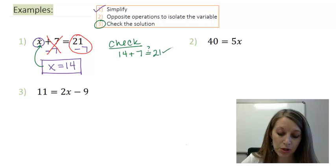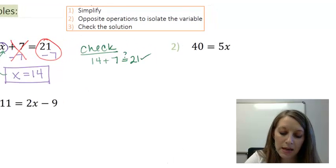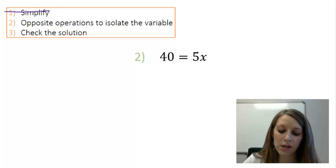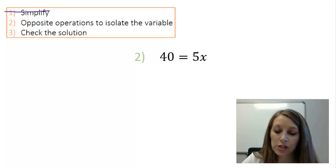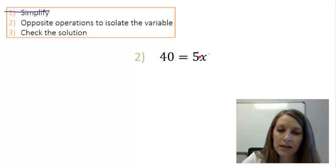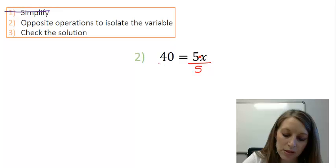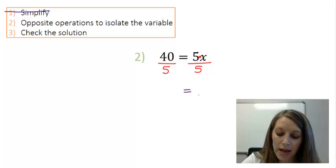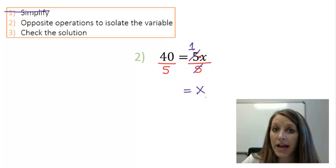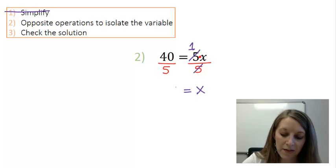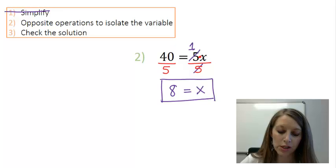Moving over to example 2, starting with my steps again, I cannot simplify either side of this equation. I need to use opposite operations. Notice this is 5 times x. So my opposite operation is to divide by 5 on both sides. Now the reason that I do that is on the right-hand side of this equation, 5 divided by 5 cancels out, leaving me with 1. And 1 times x leaves me with x. So I have isolated my variable. On the left, 40 divided by 5 gives me 8. And since I have my variable isolated, that means I have the solution to this problem.